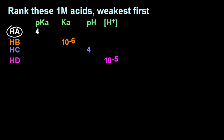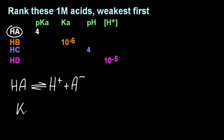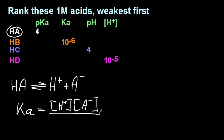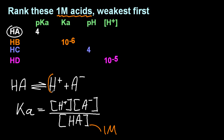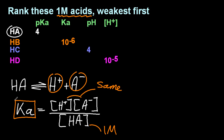Starting with HA, there's the dissociation, and there is the acid dissociation equation with a constant. Now since they're one molar acids, I can put one at the bottom, and H+ and A- are the same — looking at the equation, it's 1 to 1 to 1.